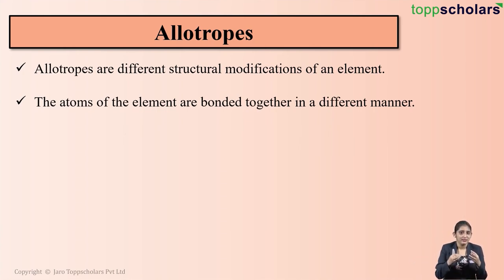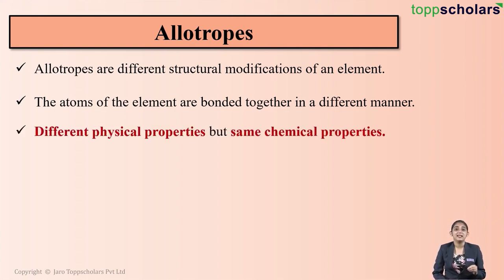Allotropes are simply when an element exists in two or more different forms. These different forms are called allotropes and these allotropes have different structural arrangements. That is, the atoms are arranged in different manner in different allotropes. That is the reason why allotropes have identical chemical properties but different physical properties, since the arrangement of atoms in the allotropes is different.